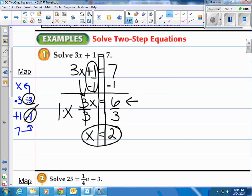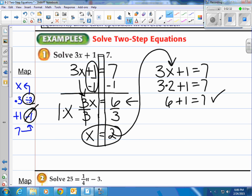How do you know it's right? We do a check. We take the original problem and we plug in the 2 for the x. So 3 times 2 plus 1 equals 7. Is that true? 6 plus 1 equals 7. It is true. So therefore, the answer is 2.